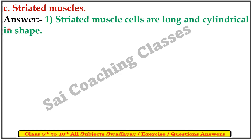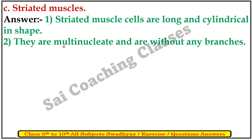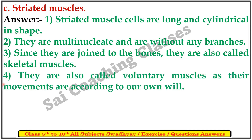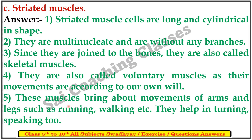C. Striated muscles. Answer: Striated muscle cells are long and cylindrical. They are multinucleate and without any branches. Since they are joined to the bones, they are also called skeletal muscles. They are also called voluntary muscles and their movement is according to our own will. These muscles bring about movements of arms and legs such as running, walking, turning, and speaking.